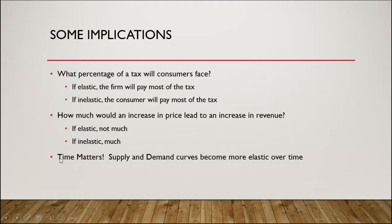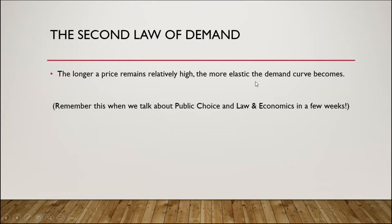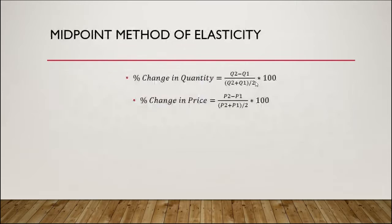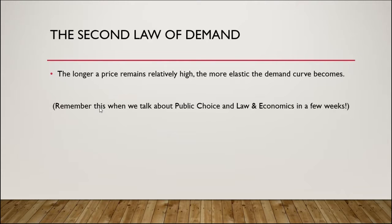One final implication is that time matters. Over time, supply and demand curves become more elastic as people search out more substitutes, as technology changes, and as available substitutes come about. This leads us to the second law of demand, which states that the longer a price remains relatively high, the more elastic the demand curve becomes. We can see that at high prices — between points H and G — the demand curve is already relatively elastic, and as the price remains high even longer, people find more and more substitutes.